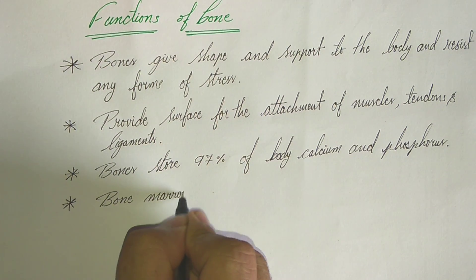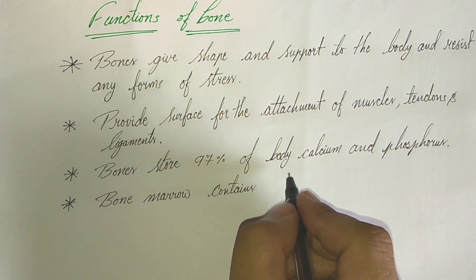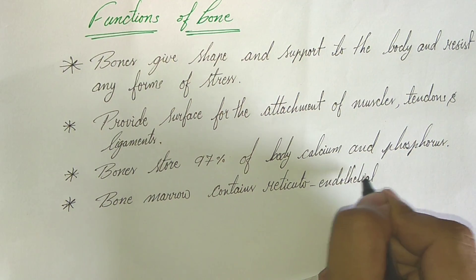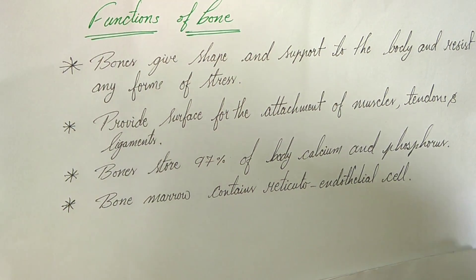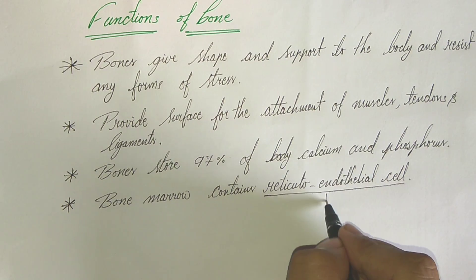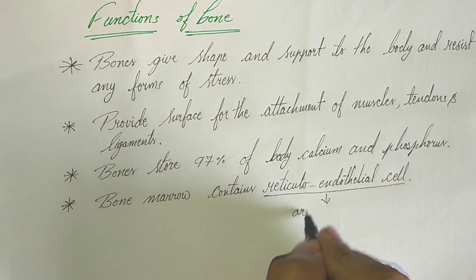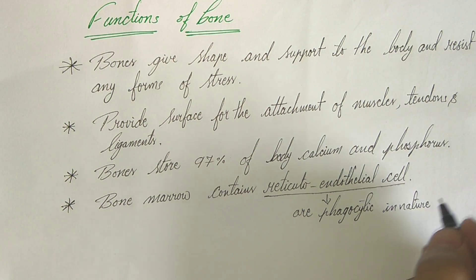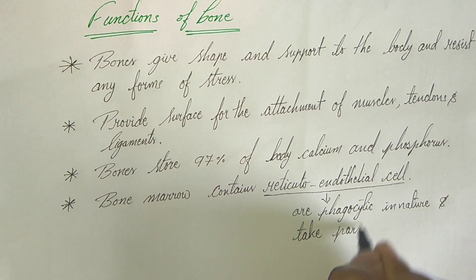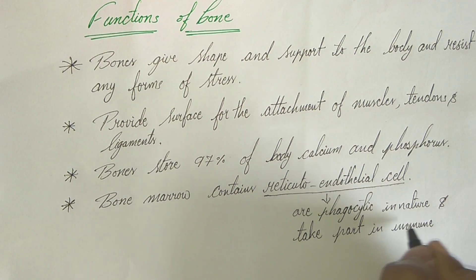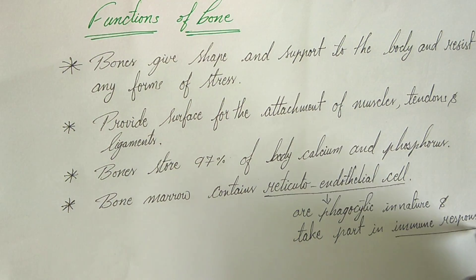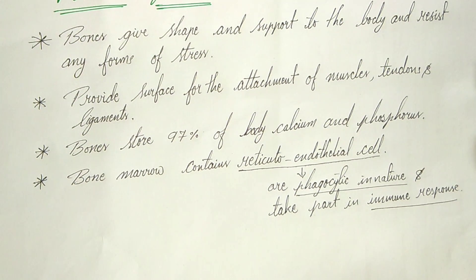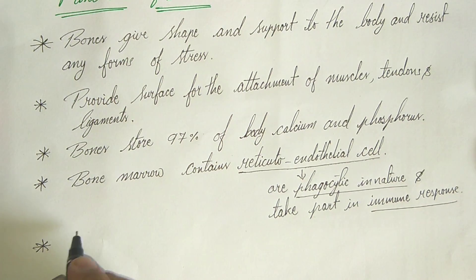Fourth function of bone is bone marrow. Bone marrow contains reticuloendothelial cells. So what does this reticuloendothelial cells do? If you know guys comment it below in comment box. So reticuloendothelial cells are phagocytic in nature and it also take part in immune response to our body. So two functions of reticuloendothelial cells which is present in bone marrow: phagocytic in nature and it also take part in immune response to our body.